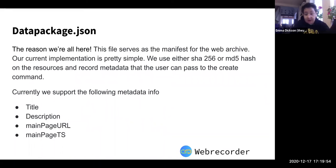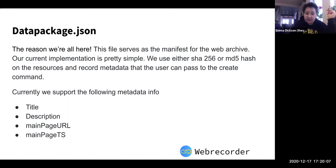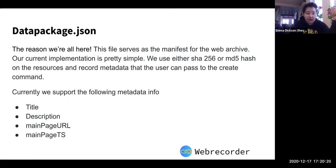The datapackage.json file is used as the manifest for the web archive. Our current implementation is pretty simple — we use either MD5 or SHA-256 to hash the resources. We try to follow the Frictionless standard and also support additional metadata that the user can pass in: a title, a description, a main page URL, and a main page timestamp to specify an entry point into the archive.